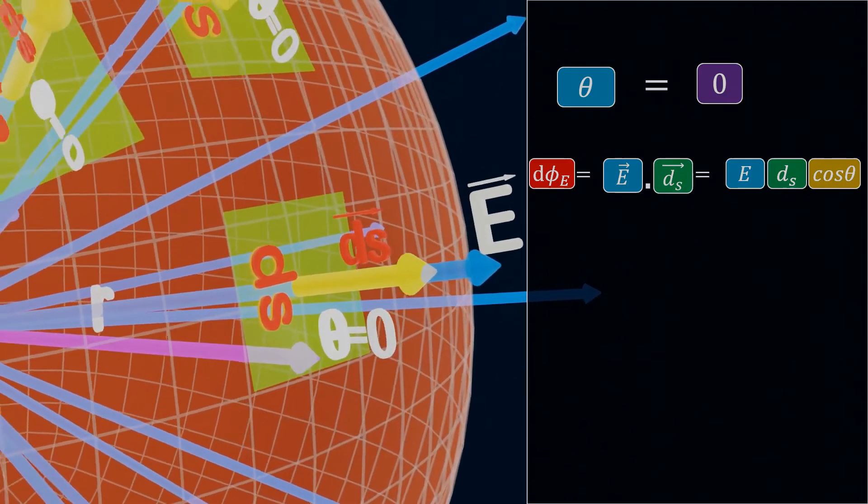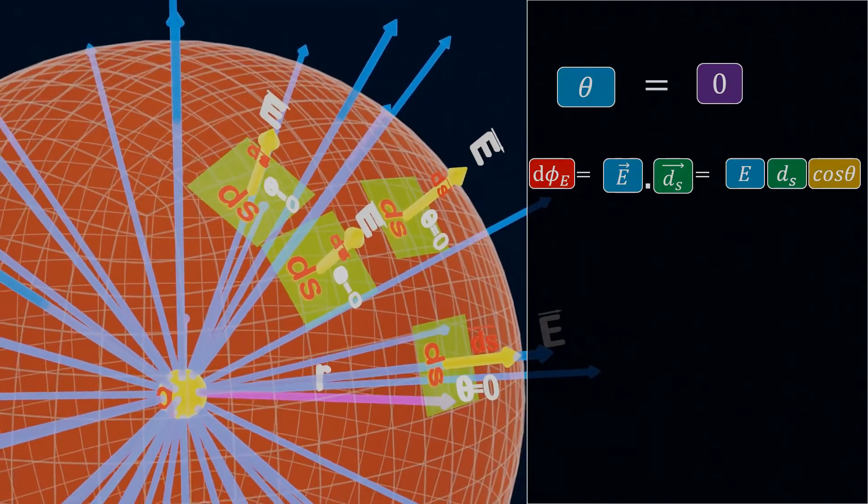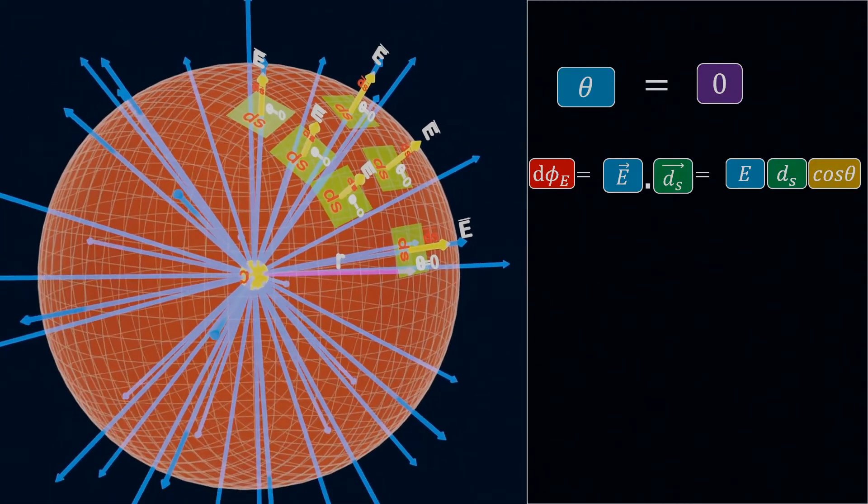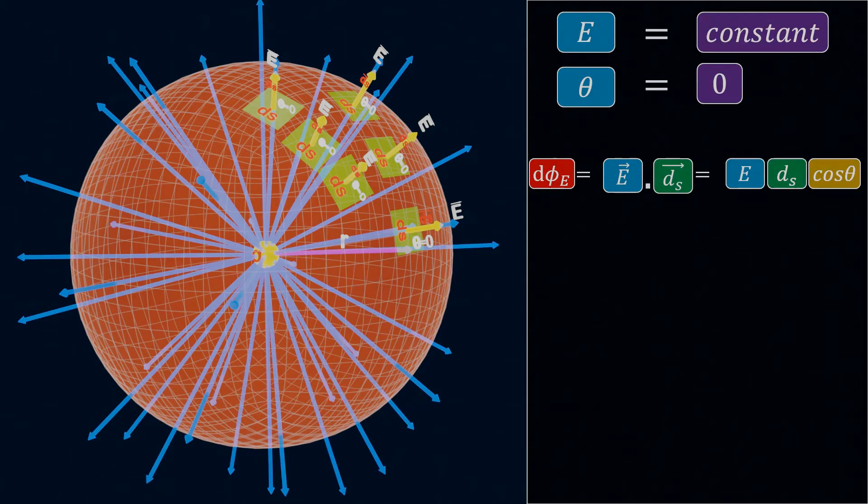In a similar way, if we consider multiple dS elements, since all the dS elements are located at a distance R from the charge Q, the electric field intensity will remain constant over the entire spherical surface. Additionally, since the electric field is radially outward, the value of theta for all the elements will be 0 degrees.